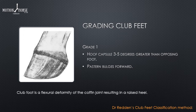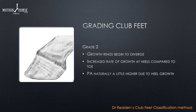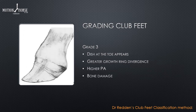Grade two is very similar in angle to a grade one, however we start to see growth rings begin to diverge — similar to the case shown earlier — with tightening of growth rings around the dorsal toe area and increasing thickness toward the heels, indicating increased growth rate at the heels compared to the toe. The palmar angle of the pedal bone is naturally a little higher due to that increased heel growth.